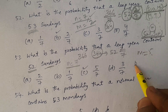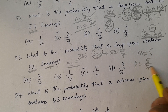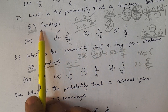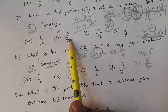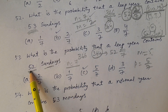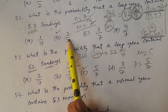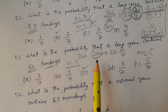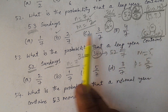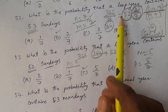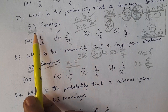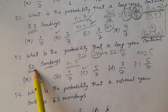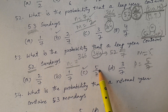Therefore, probability = m/n = 5/7. To summarize: for a leap year, the probability of 53 Sundays is 2/7, and the probability of 52 Sundays is 1 − 2/7 = 5/7.